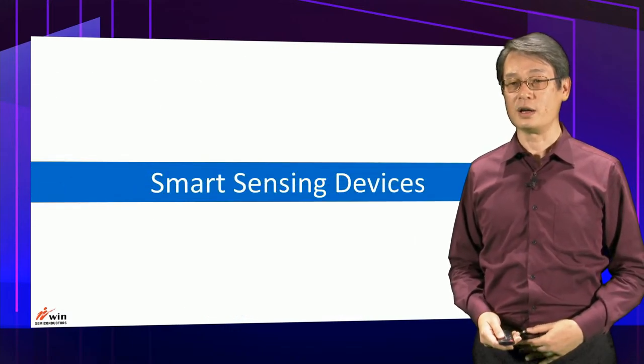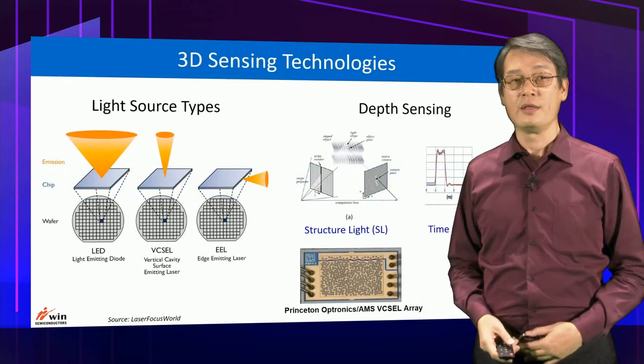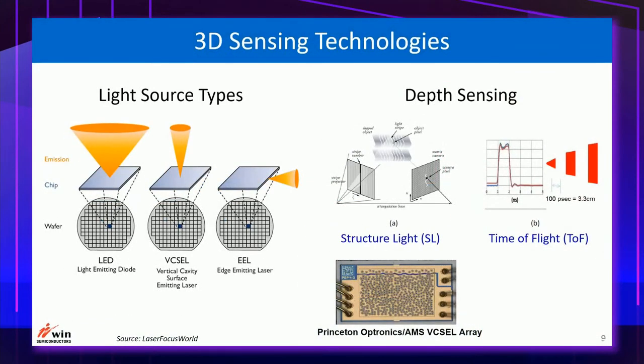Let's see how compound semiconductors can contribute to smart sensing devices. There are three types of light sources for 3D sensing technology: LED, VCSEL, and edge-emitting lasers. Each has its own advantages over the other two. VCSEL is the most widely used light source today.